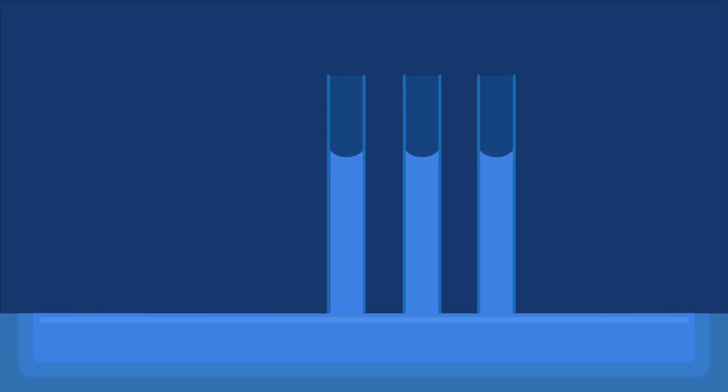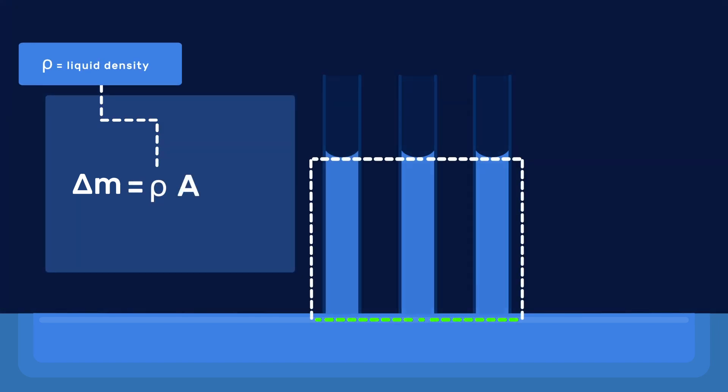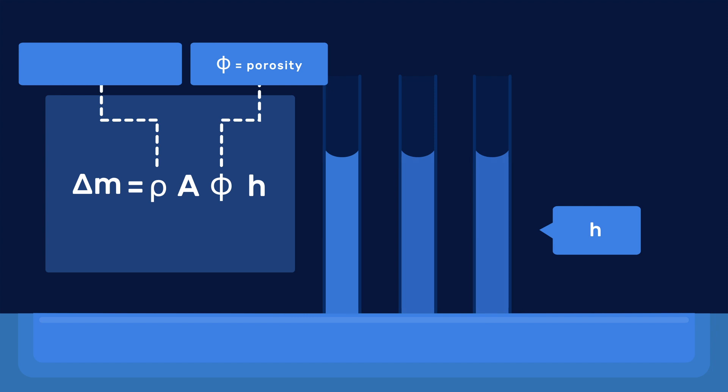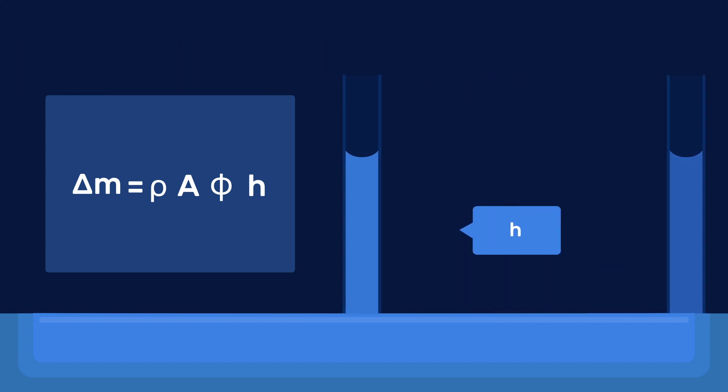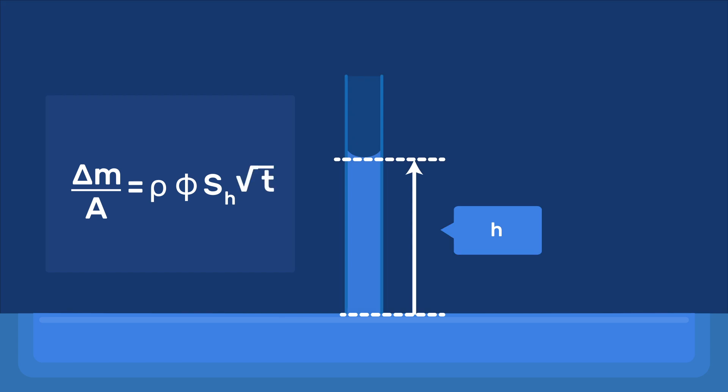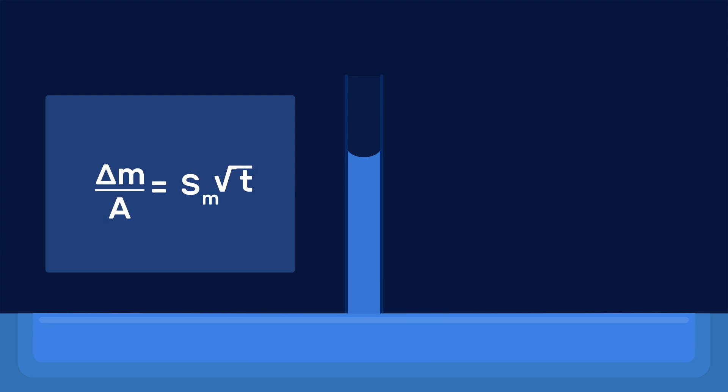Experimentally, it is easier to measure the mass of the liquid than its height. Both are related since the mass change is the product of the liquid density, the base area of the sample in contact with the liquid, the sample porosity, and the liquid height, h. Substituting our previous equation for h, we find that the mass change per unit area of the sample is rho phi sh square root of time, which is best written as a product between a mass-based sorptivity, sm, and the square root of time, where sm equals rho phi sh.